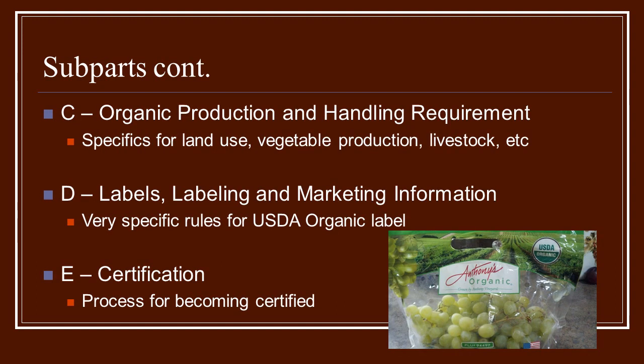Continuing on with the subparts of the federal regulations, Subpart C has information about organic production and handling requirements — that's really how you're going to manage your farm. It includes all the rules and regulations for land use, vegetables, and whether you're doing vegetable production or livestock. It is all broken down into what you can do and how you should manage your farm according to the organic rules.